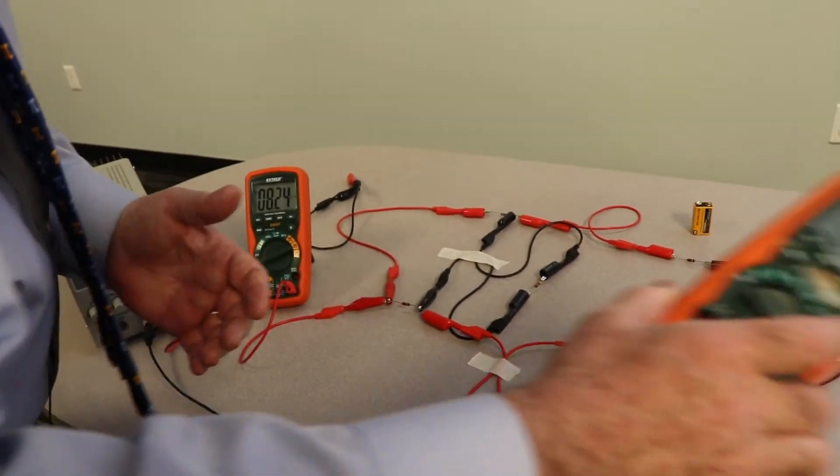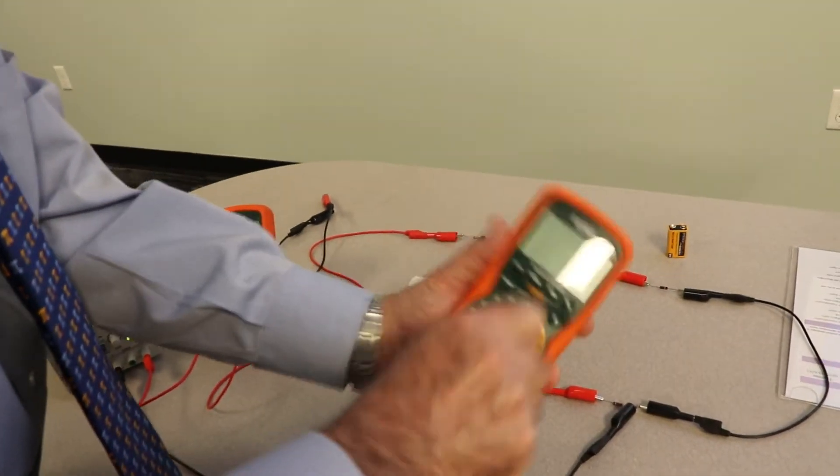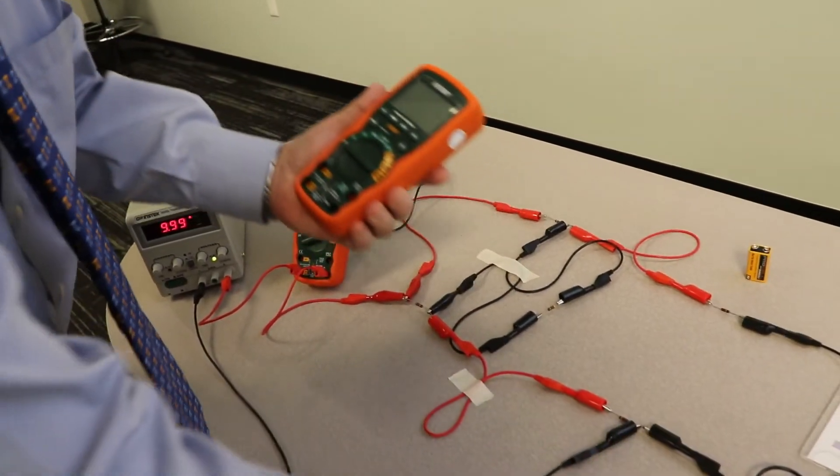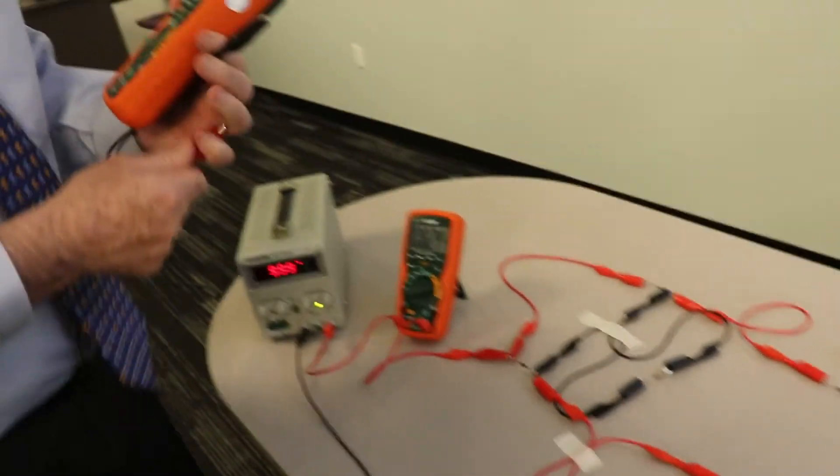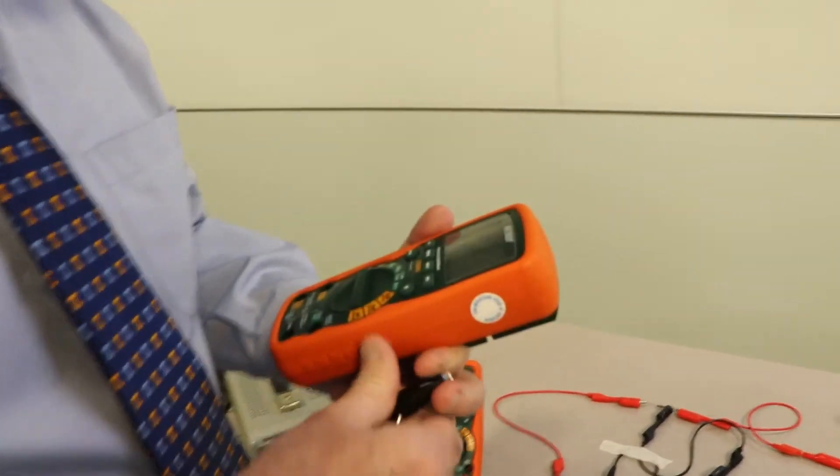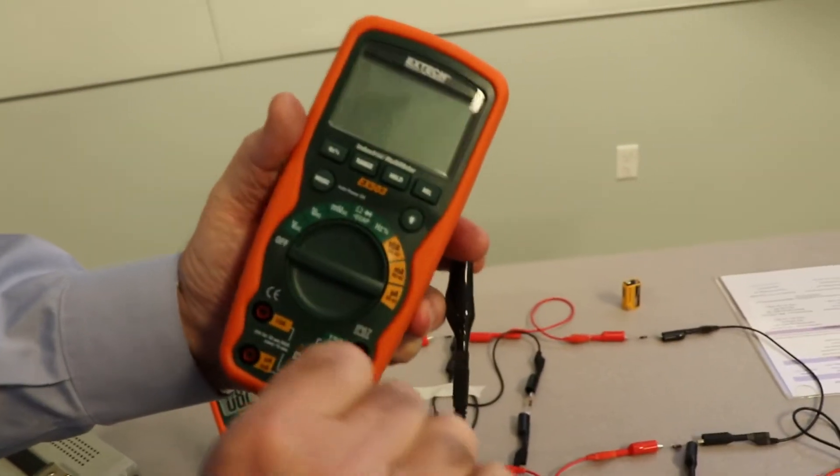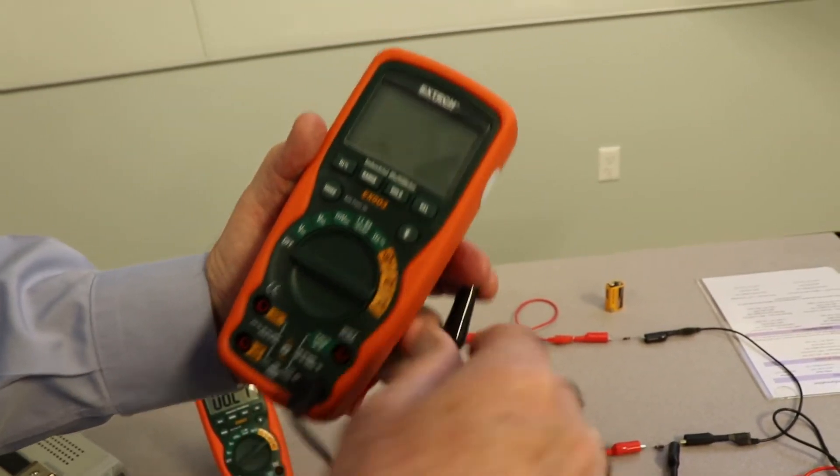We'll hook this thing up like an ammeter. So to do that, I take one black lead, and I plug it into the common. So again, you need that common right there.